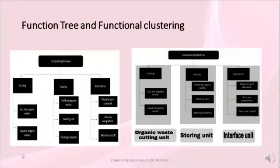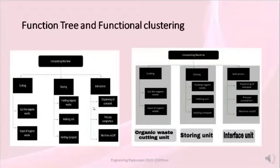Function tree and functional clustering: We have classified the working of the compost machine into three categories — cutting, sorting, and indications. In cutting, we put in the organic waste and the system starts cutting. In sorting, it holds the organic waste, soil, and the compost. In indications, it indicates the dispensing of the compost, process completion, and machine on and off.